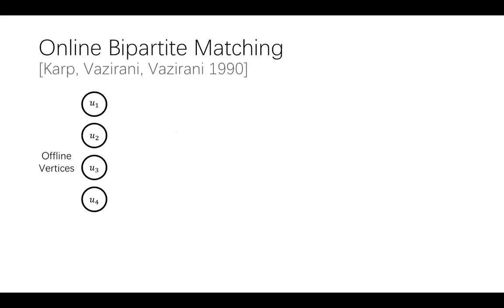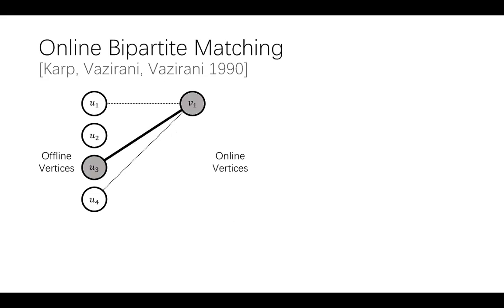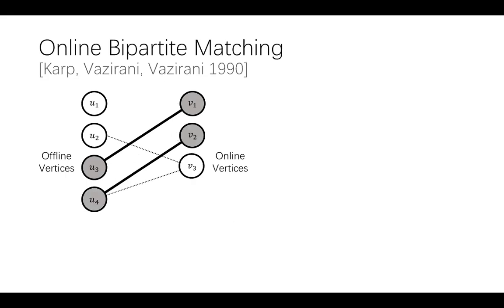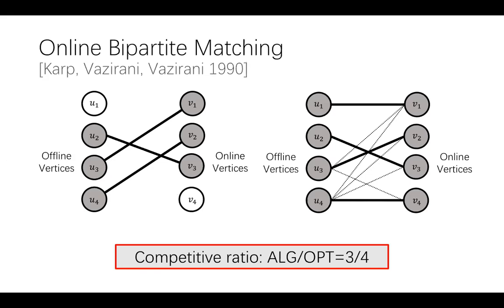Here is an instance with four offline vertices U1 to U4. When the first online vertex V1 arrives, assume that we match it to U3. Then V2 has only one neighbor U4, and V3 has only one neighbor U2. When the last vertex V4 arrives, because both of its neighbors have been matched, we must leave V4 unmatched. The benchmark is the optimal cardinality when all vertices are known up front, so the competitive ratio in this instance is 3 over 4.